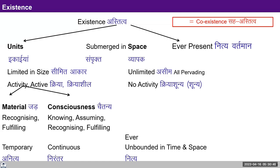Yesterday we briefly talked about Existence — that Existence is in the form of Co-Existence and it is ever-present. It was there, it is there, and it continues to be there. This Co-Existence is of Units that are submerged in Space. These two are talked of separately because they are two separate realities: Units are a different reality, Space is a different reality.